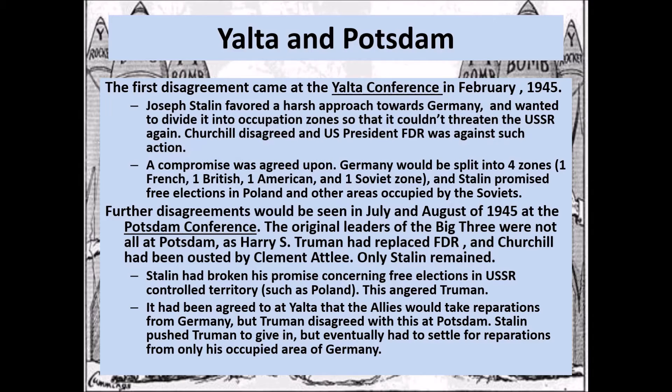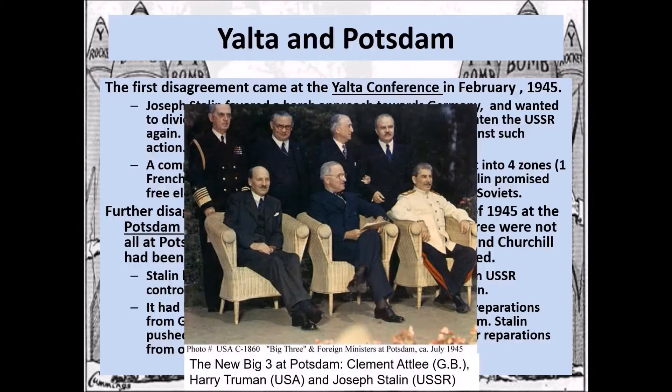It had been agreed at Yalta that the allies would take reparations from Germany, but Truman disagreed with this at Potsdam. Stalin pushed Truman to give in, but eventually had to settle for reparations from only his occupied area of Germany — only from that red zone on the map. Here's the new Big Three: Clement Attlee on the left, Truman in the middle, and Stalin on the right — Stalin being the only original member remaining.